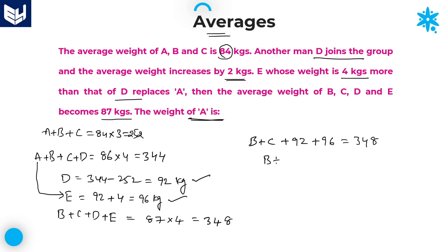From this, B plus C is equal to 348 minus 188. If you add D and E — 92 plus 96 — you get 188. Subtract 188 from 348 and you get B plus C is equal to 160.